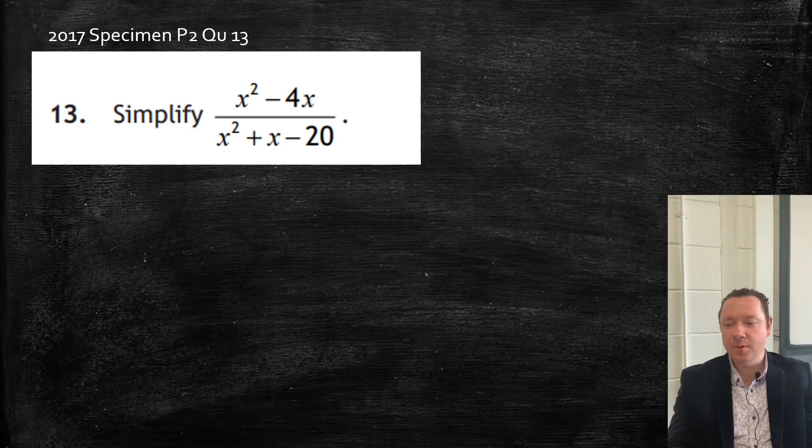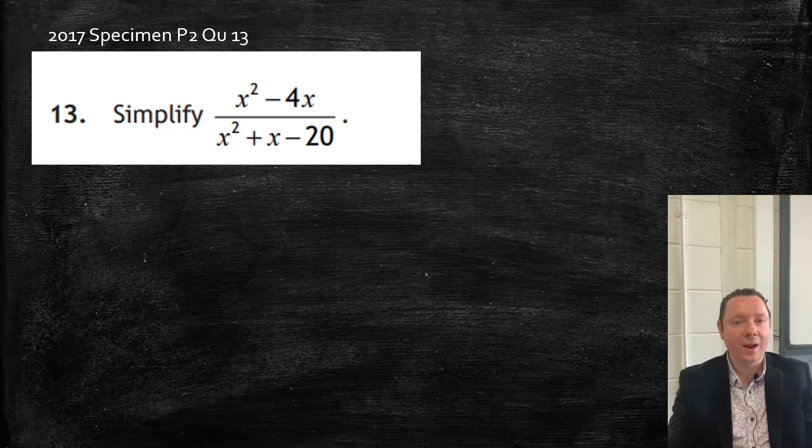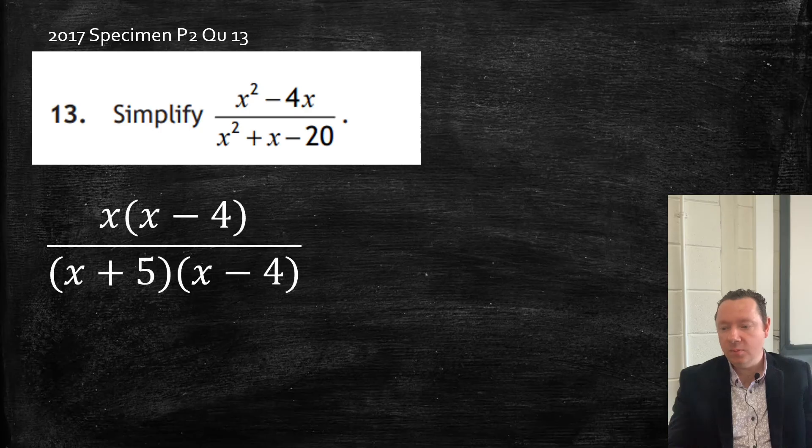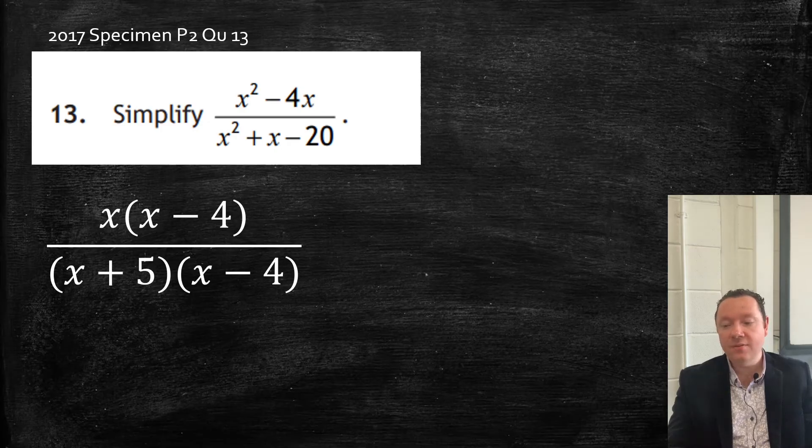The 2017 specimen paper 2, question 13. It says simplify (x² - 4x)/(x² + x - 20). So we factorise the top and factorise the bottom. Factorising the top, x is a common factor. So it's x(x - 4), and the bottom's a trinomial, which gives you (x + 5)(x - 4).